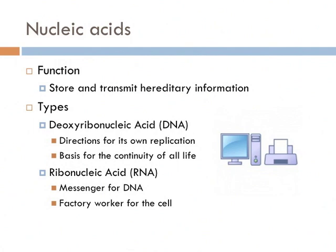The essential building blocks of all proteins are amino acids. RNA tells the ribosome in what order to connect the amino acids. The bond between amino acids is called the peptide bond. Amino acids are floating around inside the cell all the time, and the ribosome uses information from the RNA to create peptide bonds between amino acids, linking them together to make proteins, which then travel around and do the work of the cell.